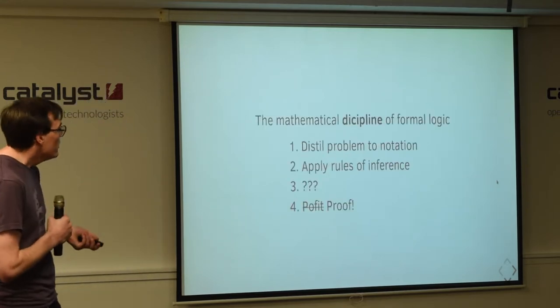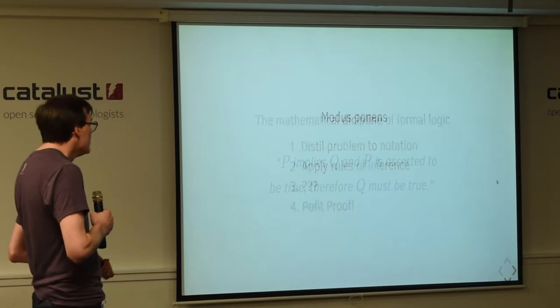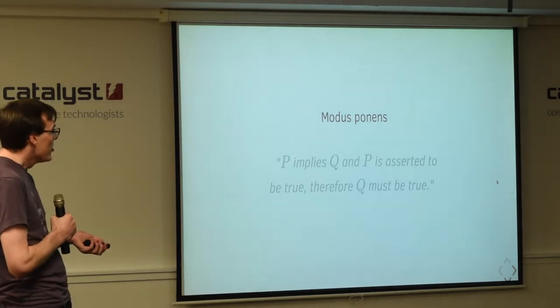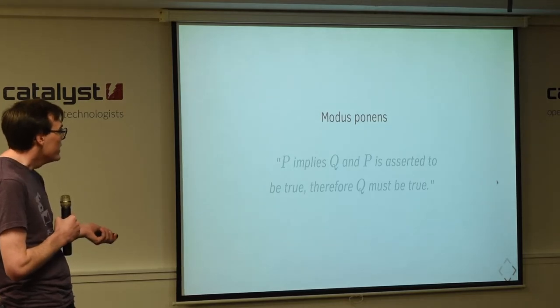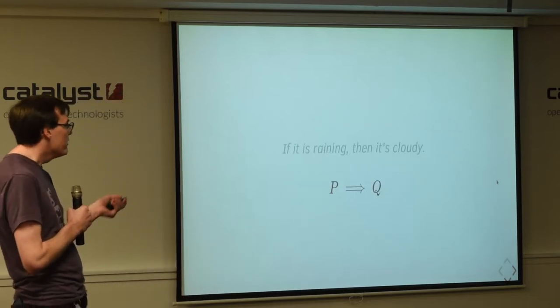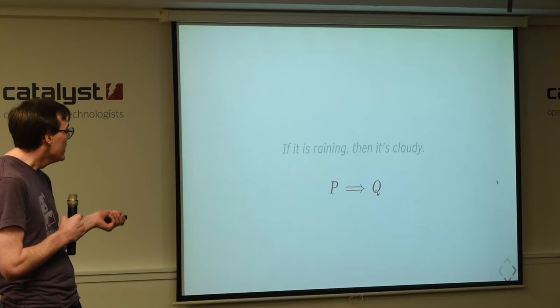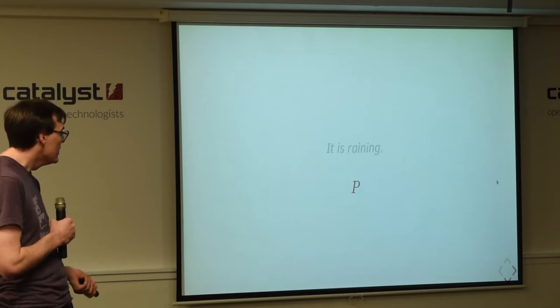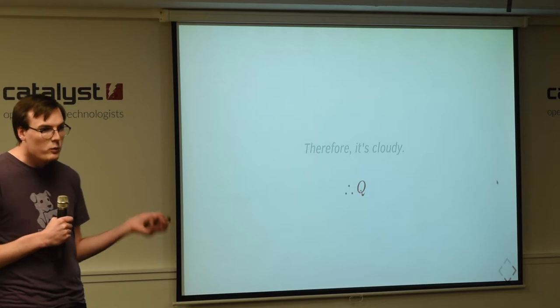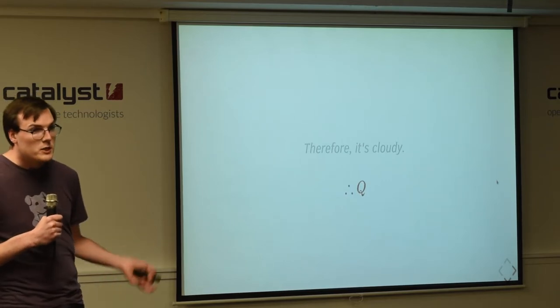But going back to formal logic, it's a mathematical discipline and we have to be more rigorous about these things. So we can apply this rule of inference called modus ponens, which is p implies q and p is asserted to be true. Therefore, q must be true. And if we go back to the problem, then we do actually have a problem in this layout. If it is raining, then it is cloudy. It is raining, therefore it's cloudy. So this argument is valid both intuitively and we can prove it mathematically as well. So that form of logic is very simple. It's called propositional logic.